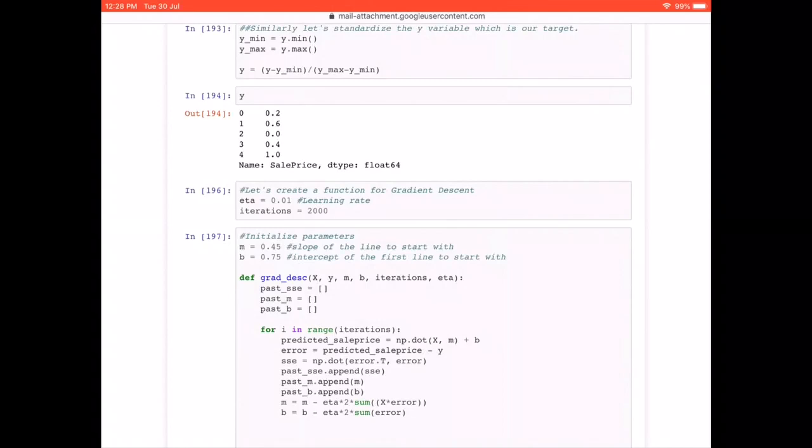And as we have discussed, we are going to run this process for 2000 times. Once we have defined these two parameters, then we are also going to initialize the slope m and b to be 0.45 and 0.75 respectively. That also we saw why we are doing it in the theoretical class.